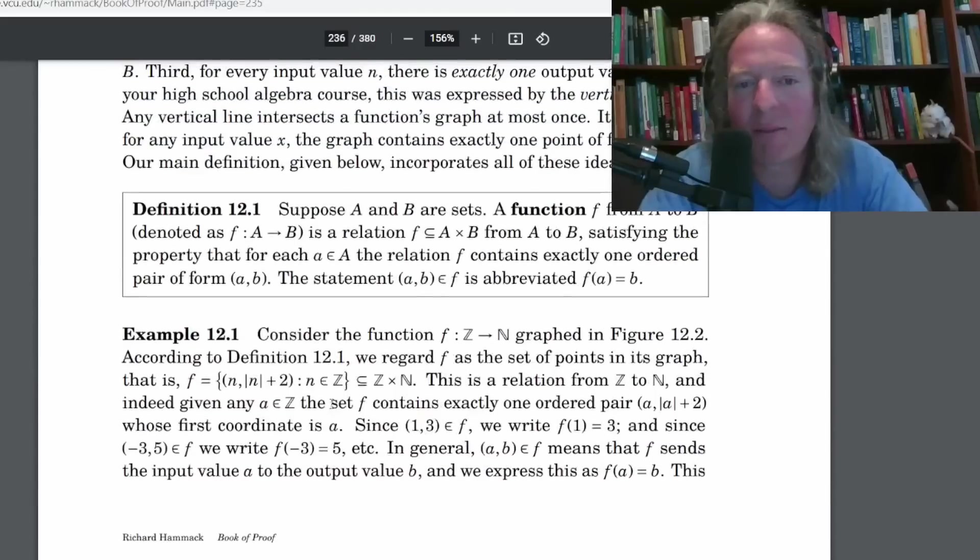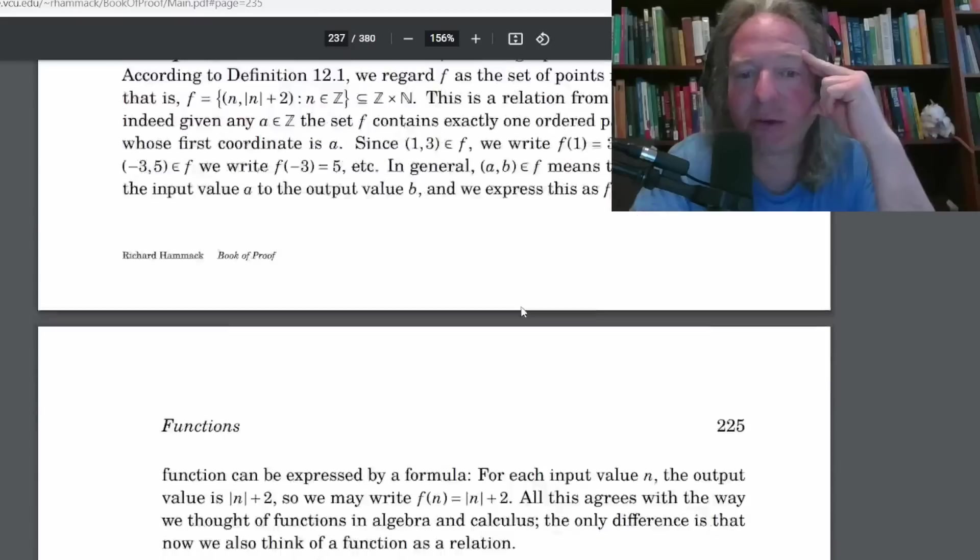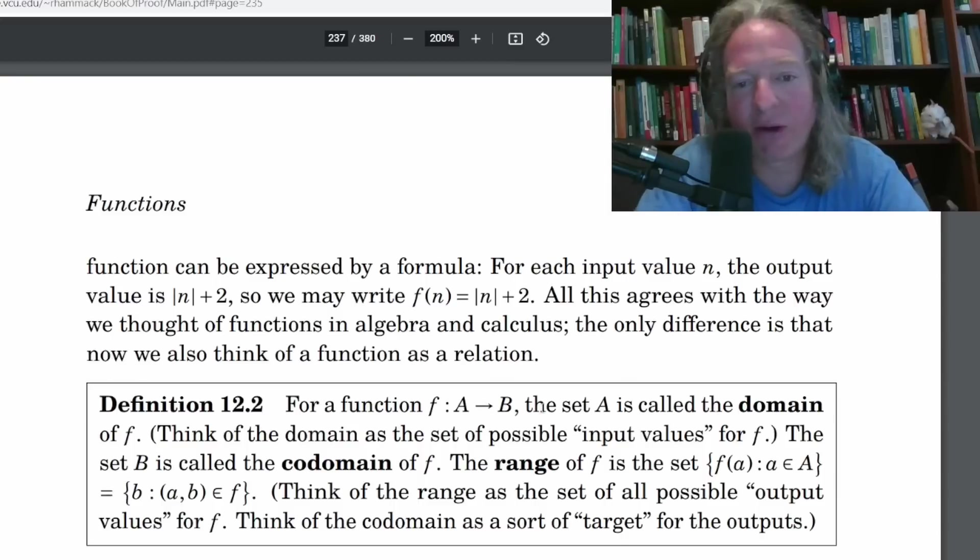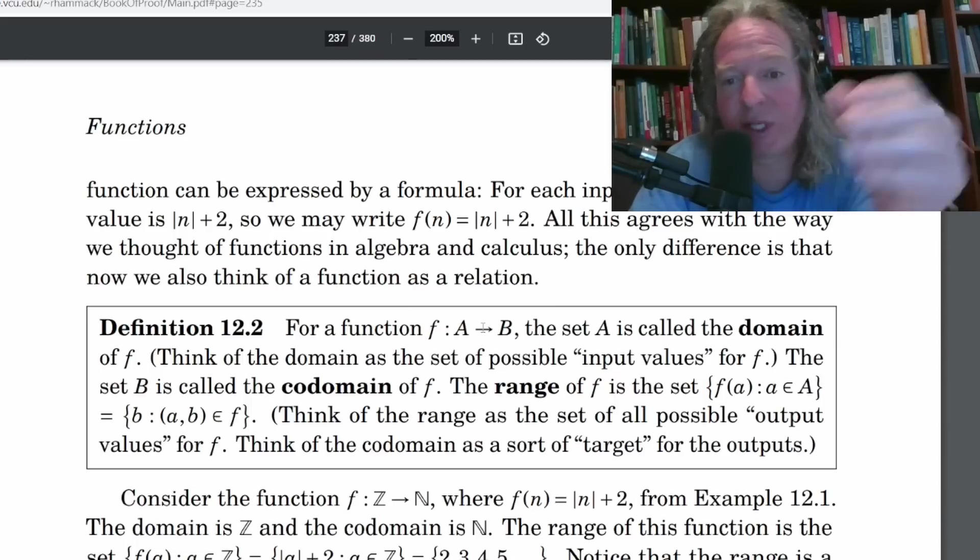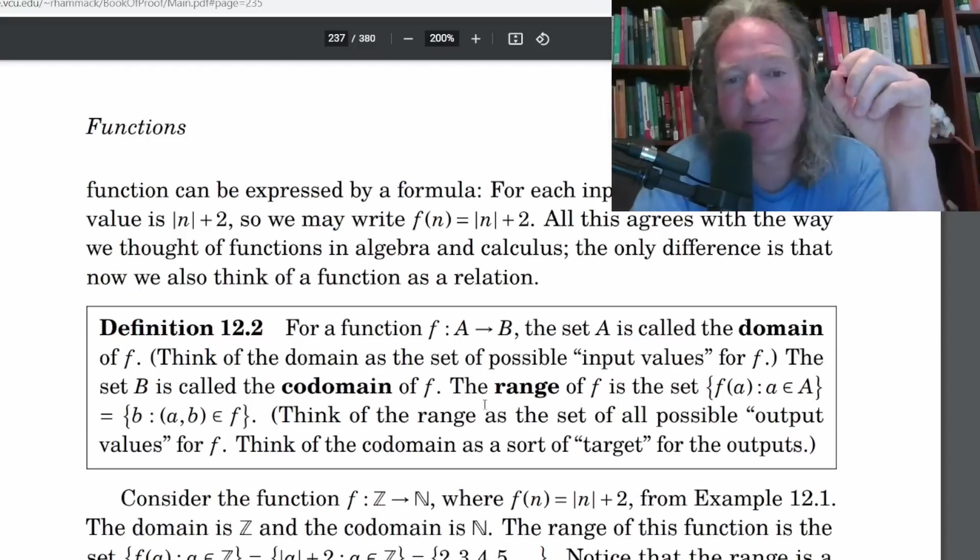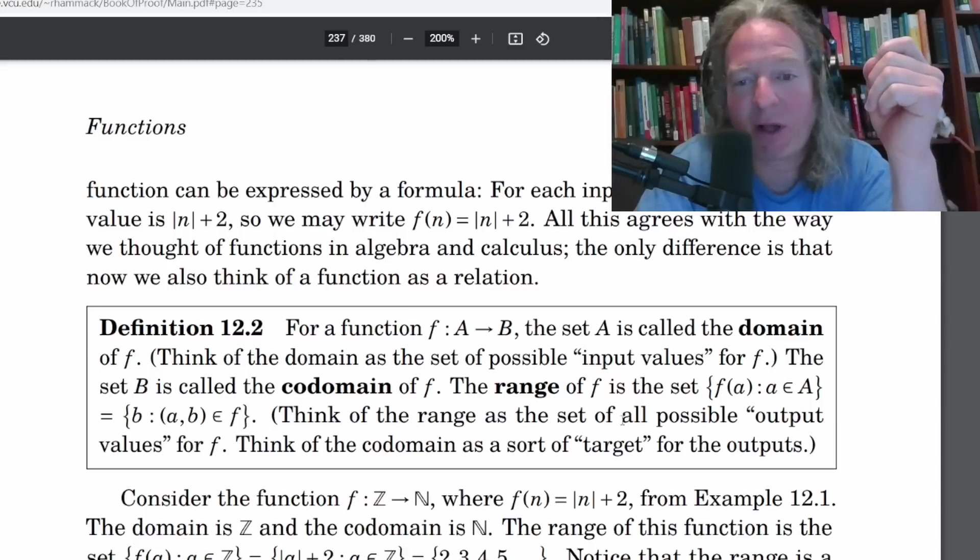It's a good way to do it. I think a lot of times books will define a function as a rule, which is fine. This is a little bit more formal and it's a good way to think about it. Or at least a good way to realize that you can think about it that way when you are doing the proofs. Talks about domain, codomain. This is that arrow notation. If you're taking calculus in college or in high school, you might not be familiar with this arrow notation. So here he defines it for a function F from A to B, the set A is called the domain. Think of the domain as the set of input values and B is called the codomain.